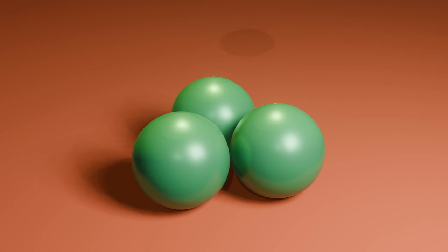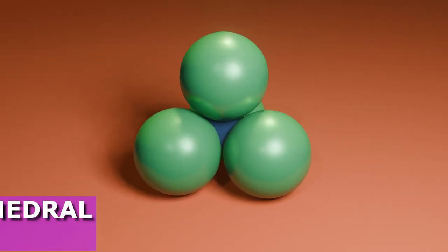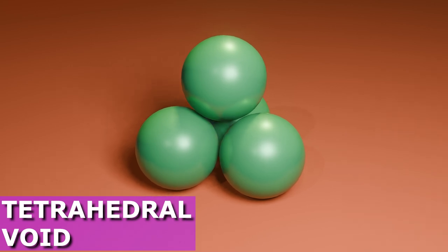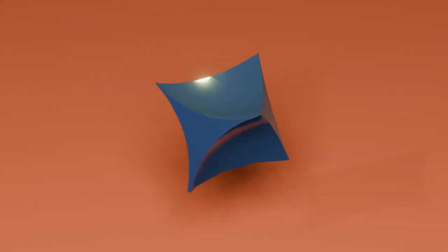When a sphere lies above the center of the triangle formed by three spheres, the volume inside is the tetrahedral void. It is called so because of the tetrahedral arrangement of spheres around it. However, the void itself does not look like a tetrahedron.